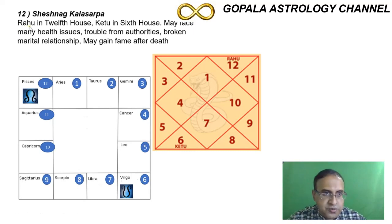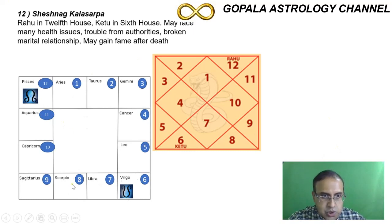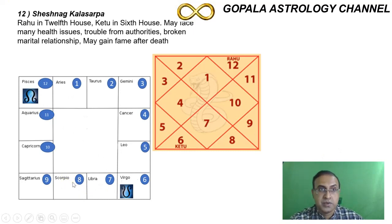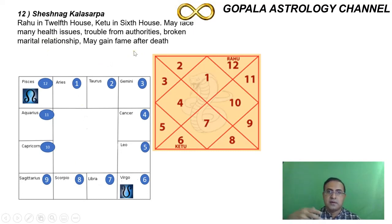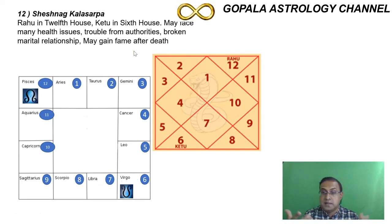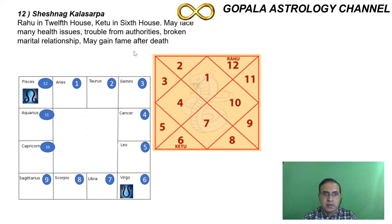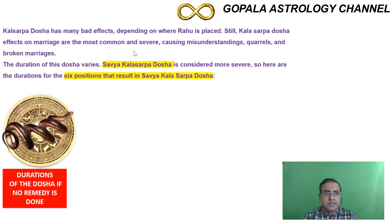In Shesha Naga Kala Sarpa Dosha, Rahu in the twelfth house aspects the eighth house — impacting the longevity of the person with possible unusual death. There will be marital relationship problems as well. However, after the person dies, their name and fame becomes more profound in the world — they may not get credit for their hard work while living, but recognition comes posthumously. These are the 12 possible combinations of different Kala Sarpa Doshas.